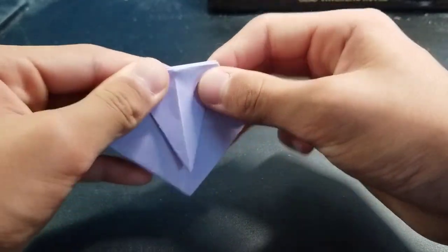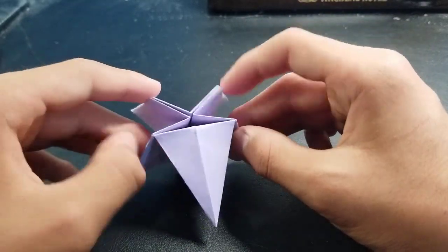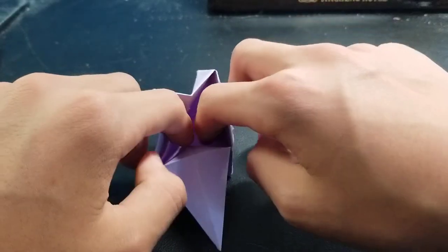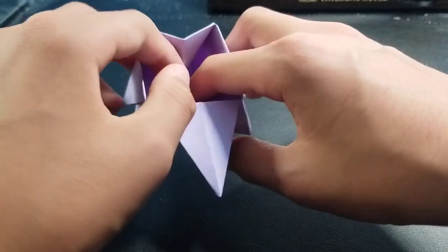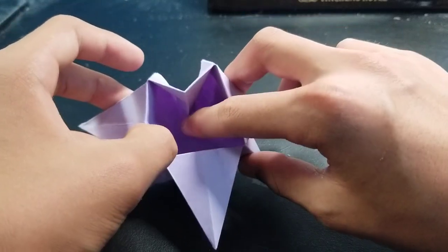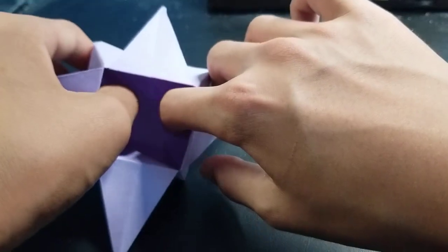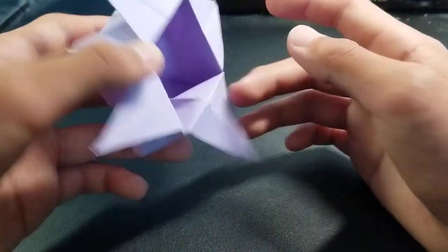With all four of these triangles, you just open it up and then it looks like a water bomb base. Like this, you just open up these two with your fingers until the bottom and you just press on these creases. And then it will be like this.